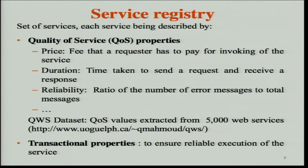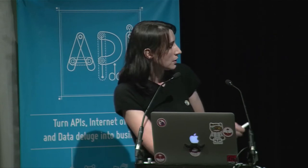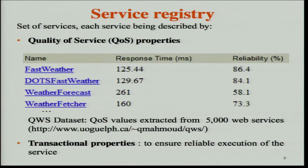You can find such quality of service values on a dataset from this website, which contains QoS values extracted from real web services. This dataset is commonly used by researchers for experiments. As a small example, if I search for a weather service, these are the first four services returned by the dataset. For each service you have its response time and reliability. So each service is described by quality of service properties, and we also need transactional properties.